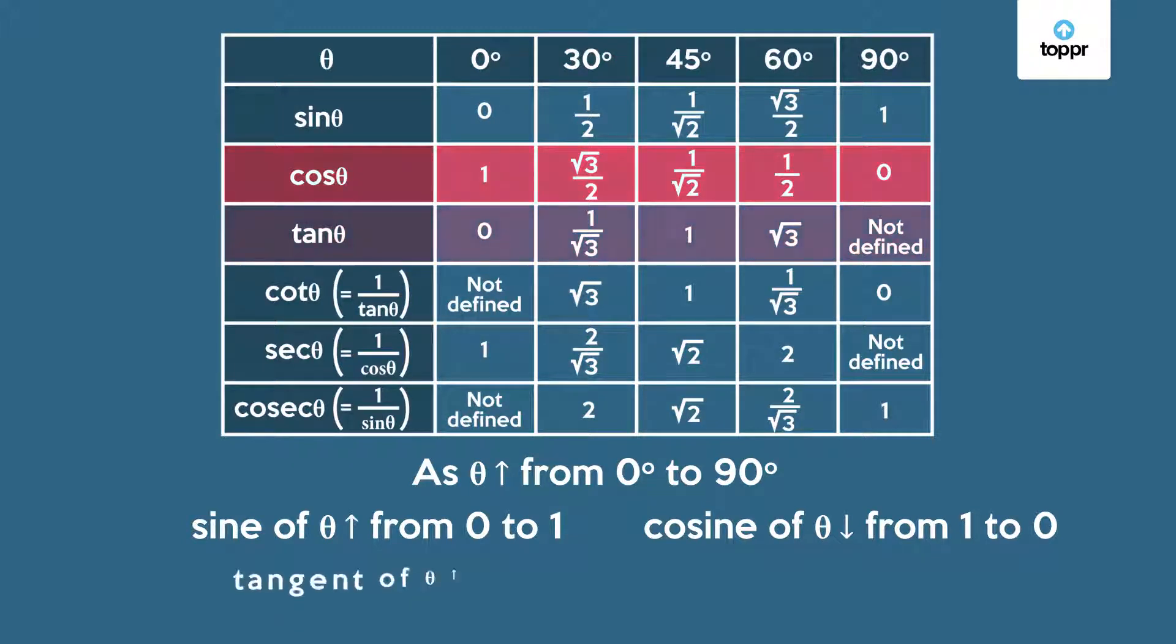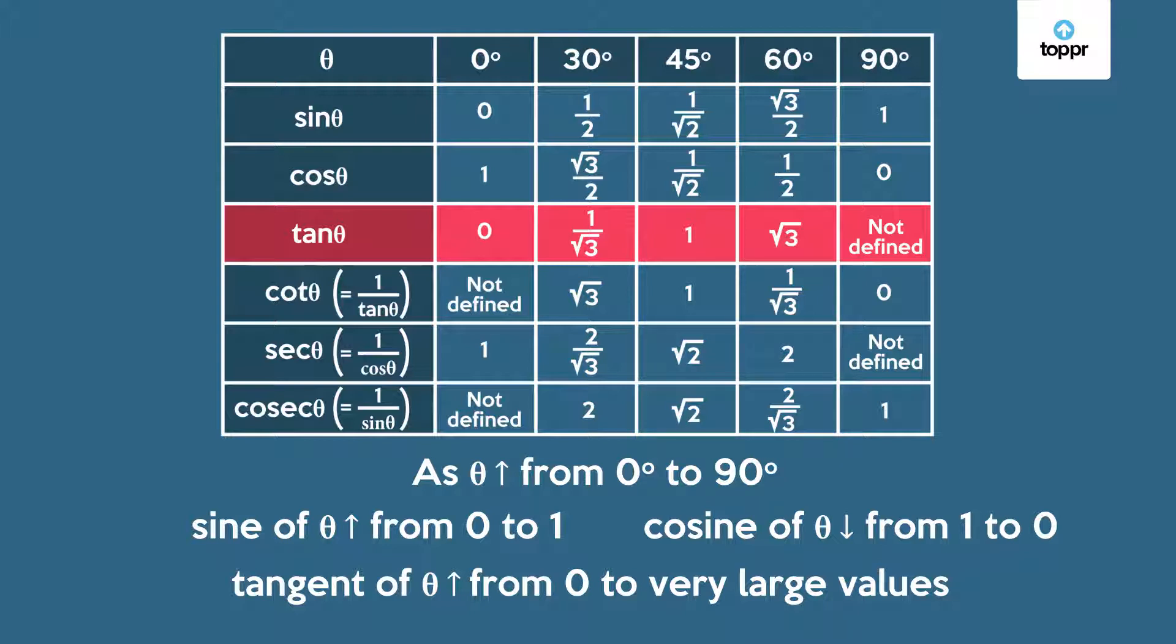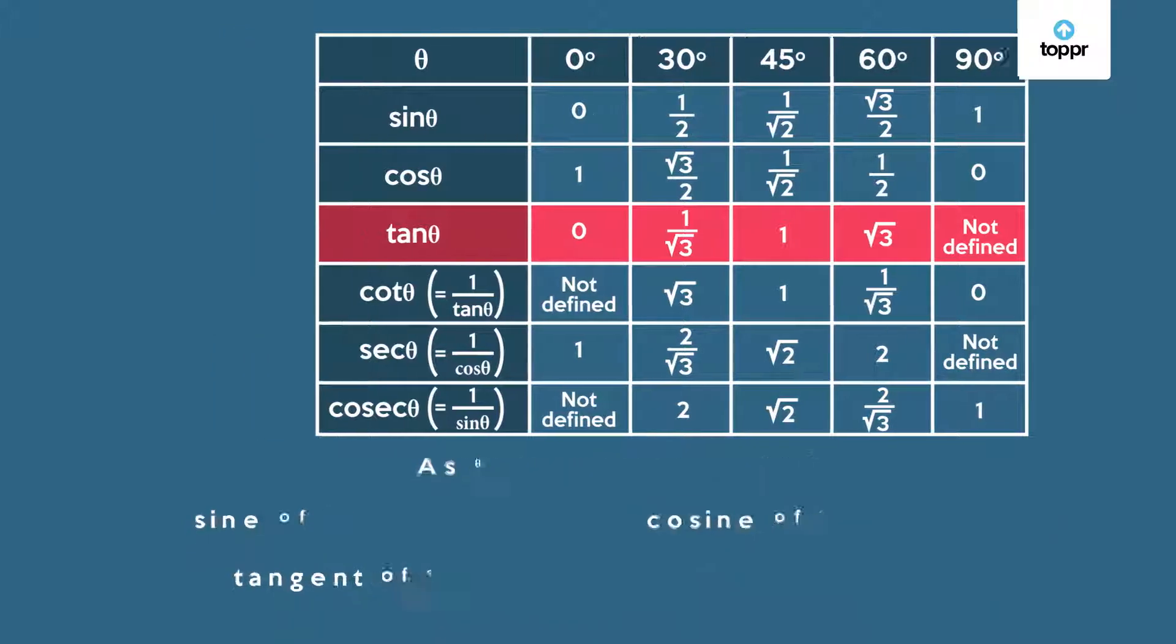Finally, the tangent of theta increases from 0 to very large values. So now you know how the trigonometric ratios change qualitatively as the chosen acute angle in the triangle changes.